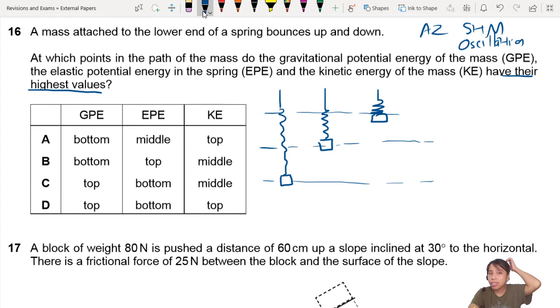Okay, where is GPE the highest? GPE is calculated by MGH. So whenever it's highest, it has maximum GPE. So that's got to be up here already. So this one here will be GPE max, highest at that position. So that will be top. Bottom's out.